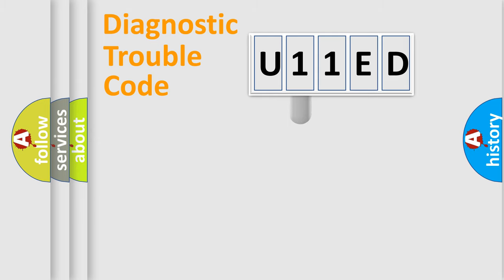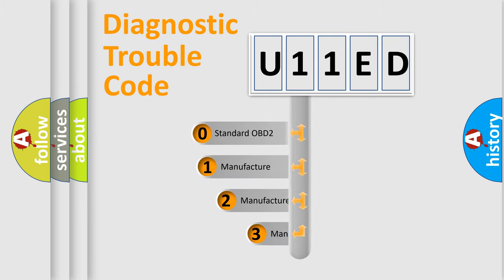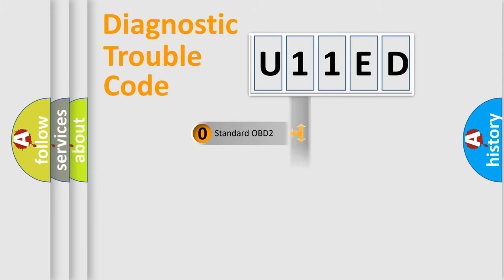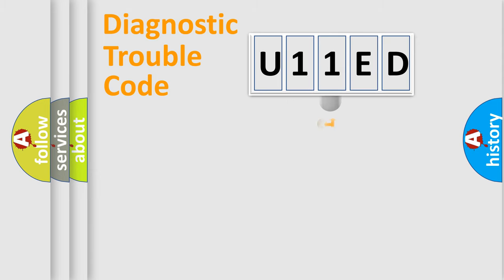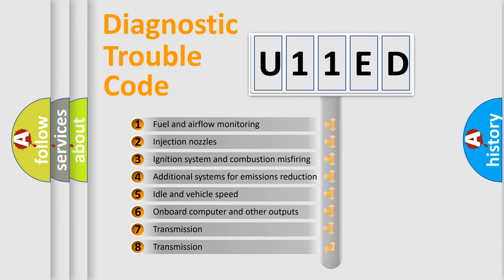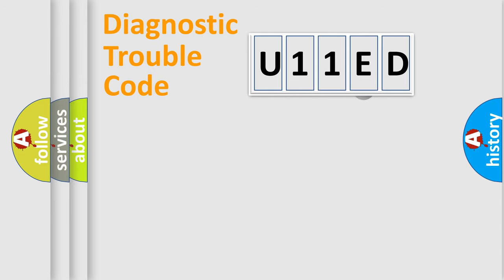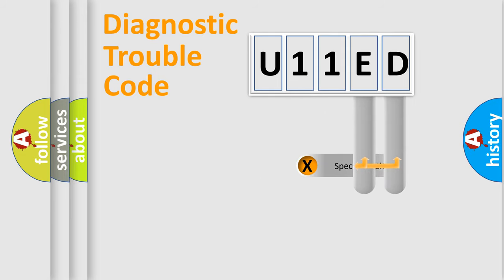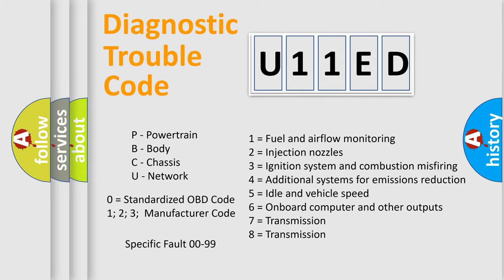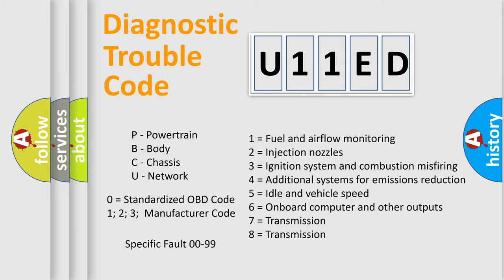This distribution is defined in the first character of the code. If the second character is expressed as zero, it is a standardized error. In the case of numbers 1, 2, or 3, it is a more manufacturer-specific expression of the car-specific error. The third character specifies a subset of errors. Only the last two characters define the specific fault of the group. This division is valid only when the second character code is expressed by the number zero.